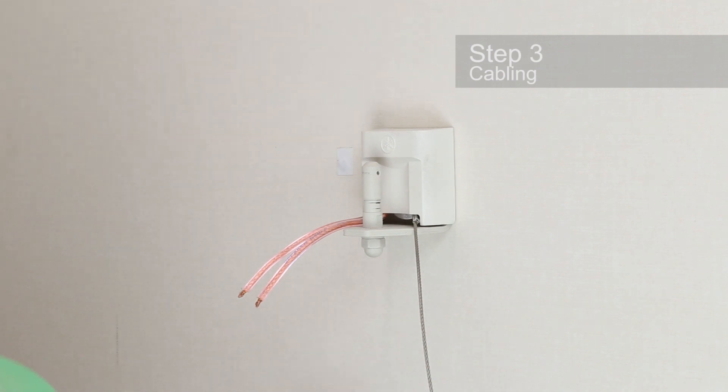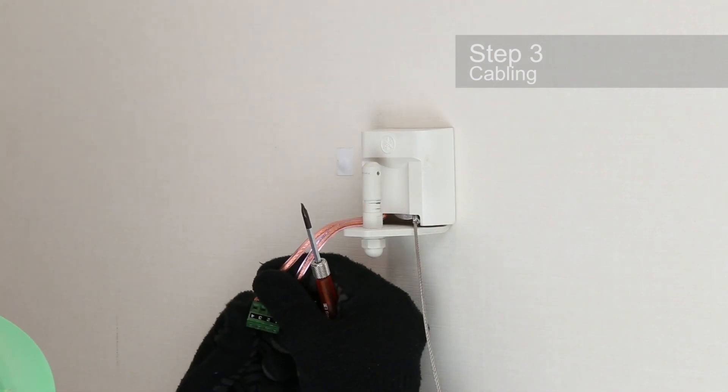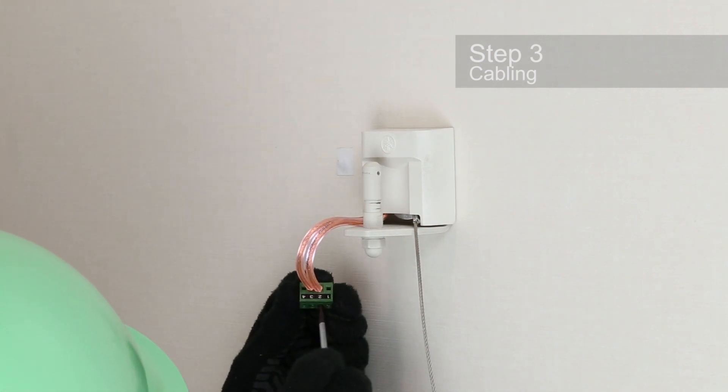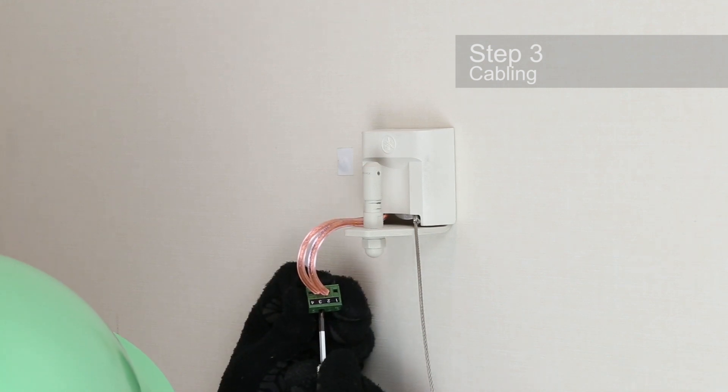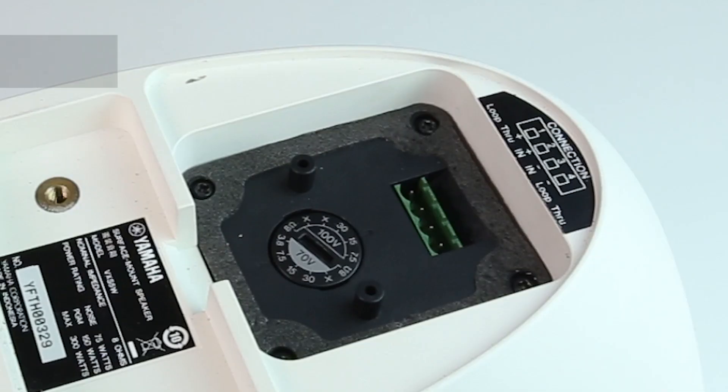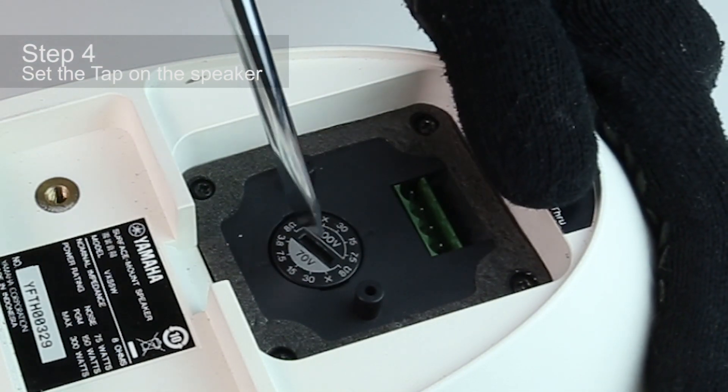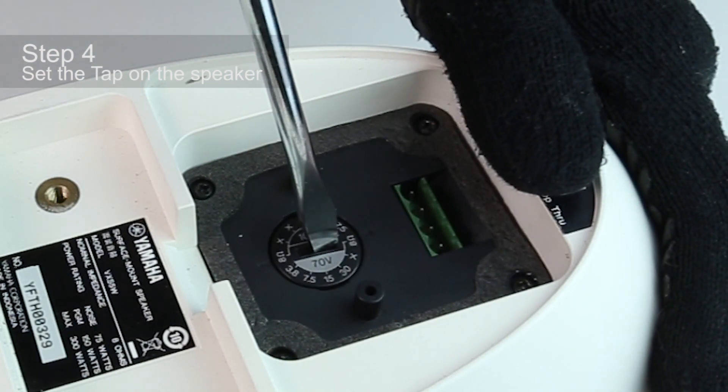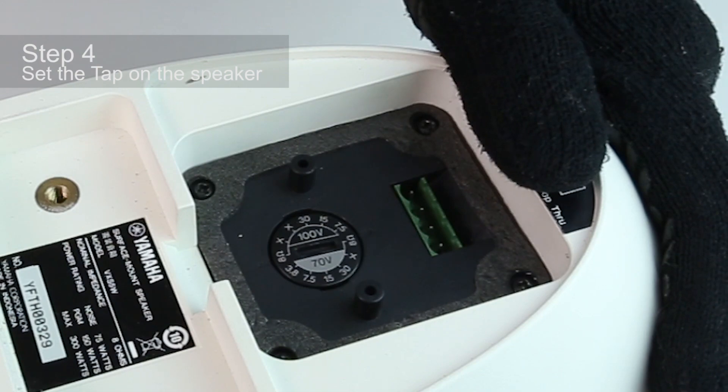Install the speaker cable to the Euroblock connector. There are two methods you can use when connecting multiple speakers: loop through terminals or parallel input terminals. You can switch between high impedance and low impedance connections with the tap switch on the back of the VXS5.